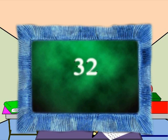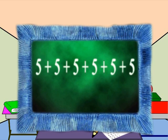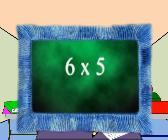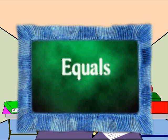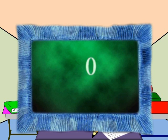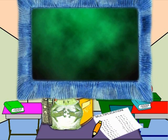Addition can help you multiply. And if we take another problem like five plus five plus five plus five plus five plus five, this is the same as six times five. And if we multiply, we get thirty. Multiplication can help you add. They're related.